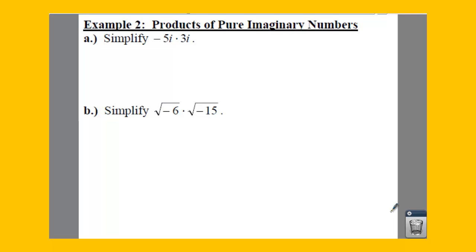For example 2, what we're going to do is find products of pure imaginary numbers. So what we have here for A is we're going to have to do a little bit of multiplying.